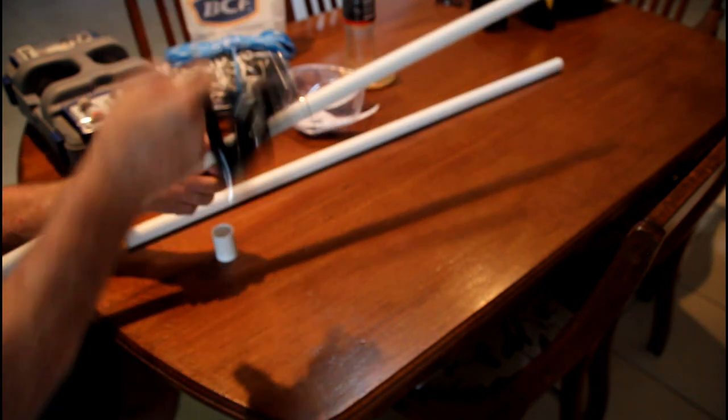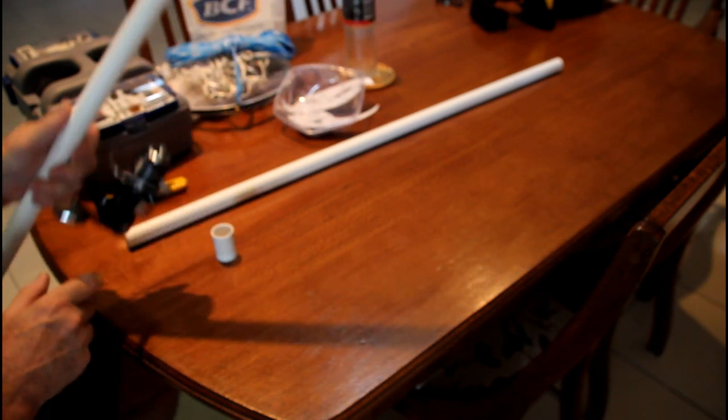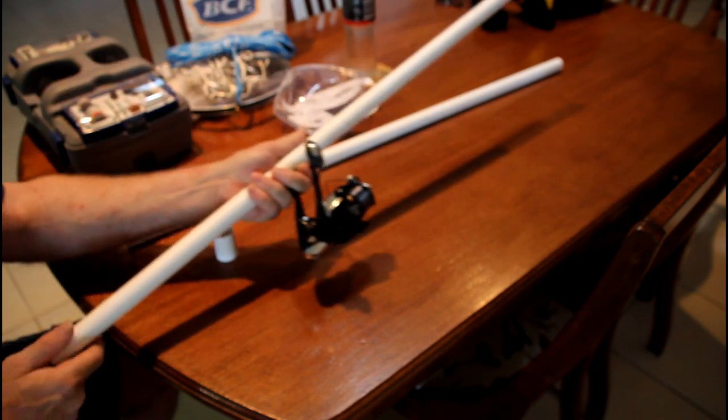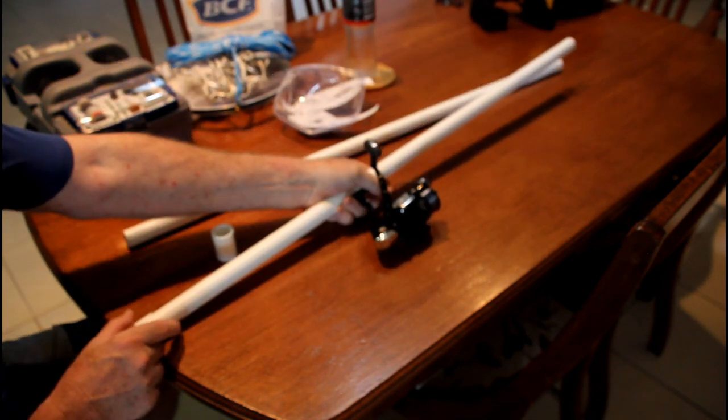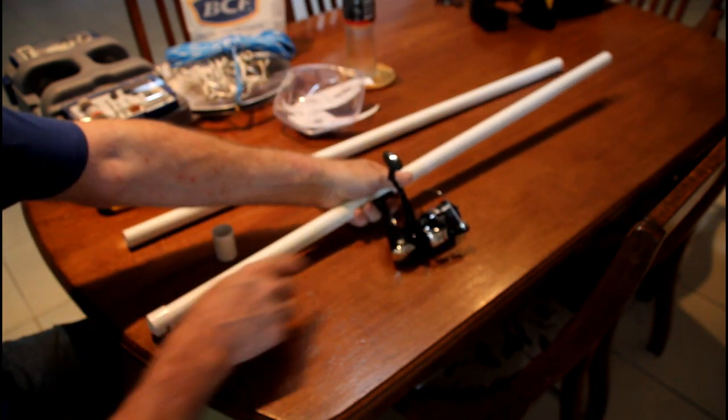The next thing to do is to figure out whereabouts along the rod you want to position the reel so that it's comfortable for you to use. And this spot's pretty comfortable for me. So I'll just set this down and go and get a pen which I forgot to get before I started so that I can mark where I want to position this reel.